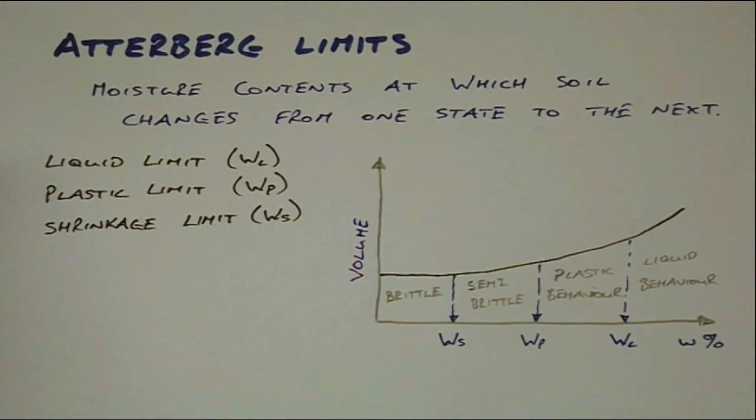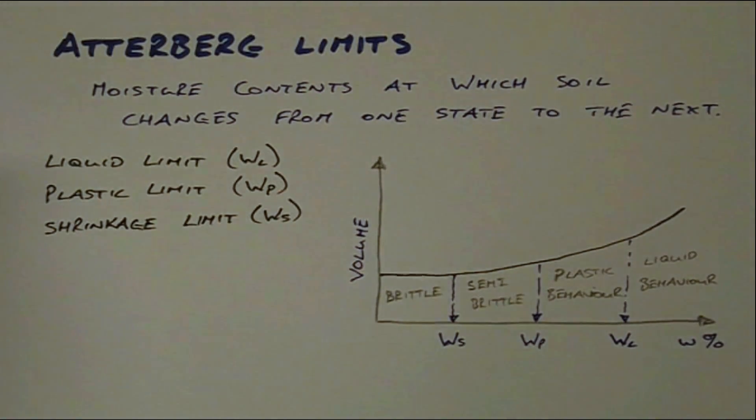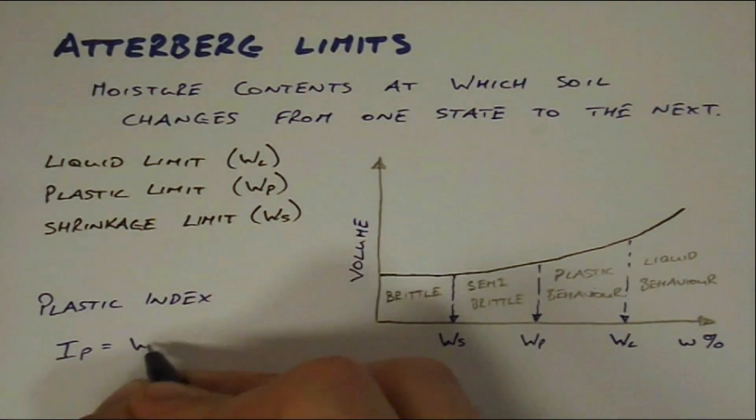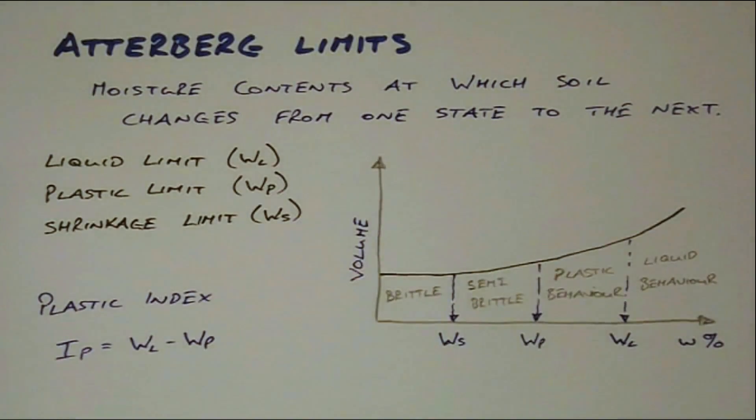The liquid and plastic limits are commonly used in practice and from these we can define the plastic index IP. By comparing the natural moisture content against these, we can determine if the soil in situ is likely to be soft or firm.